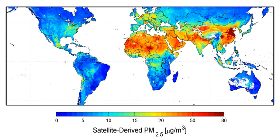Particulate pollution is pollution of an environment that consists of particles suspended in some medium. There are three primary forms: atmospheric particulate matter, marine debris, and space debris. Some particles are released directly from a specific source, while others form in chemical reactions in the atmosphere. Particulate pollution can be derived from either natural sources or anthropogenic processes.